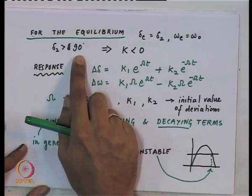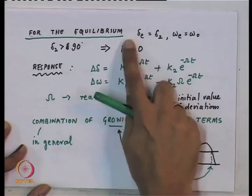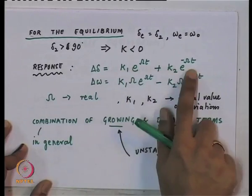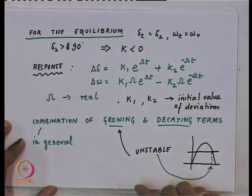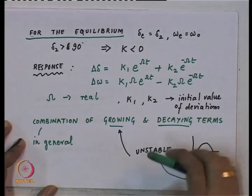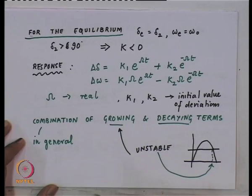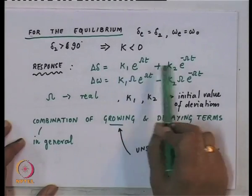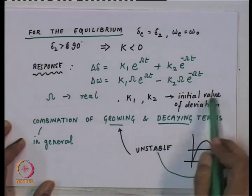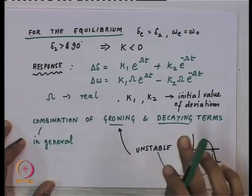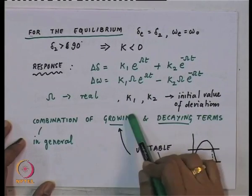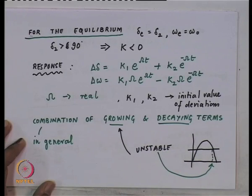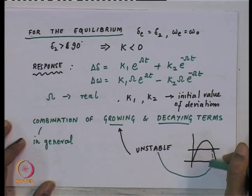The other equilibrium delta_2, which is greater than 90 degrees, is an unstable point — k is less than zero. Why is it unstable? Because the response turns out to have one component where omega is real, and one of the components can be greater than zero. So you will have a combination of growing and decaying terms. K_1 and K_2 are dependent on the initial value of deviations, and for most initial conditions, K_1 and K_2 will be non-zero.